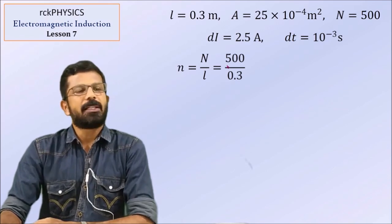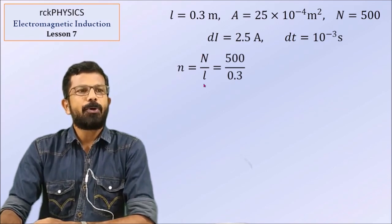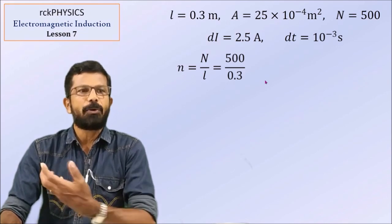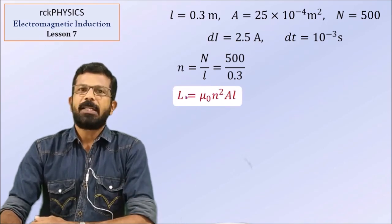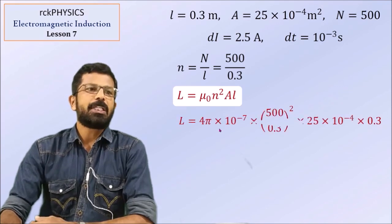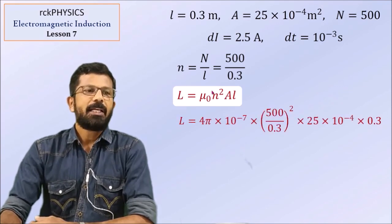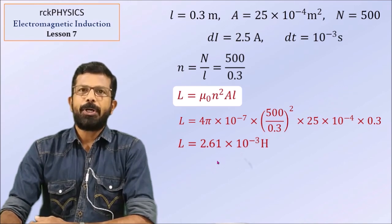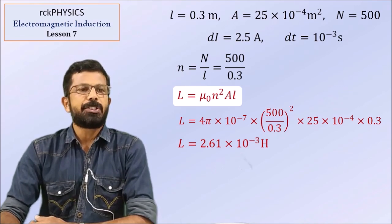Number of turns per unit length, small n, is equal to total number of turns divided by length of solenoid — that is 500 divided by 0.3. The inductance of a solenoid is given by L equals mu0 n² A times the length. Substituting: mu0 is 4 pi into 10 raised to minus 7, n is 500 divided by 0.3, area is 25 into 10 raised to minus 4 m², and length is 0.3 m. The calculation gives L equal to 2.61 into 10 raised to minus 3 Henry.